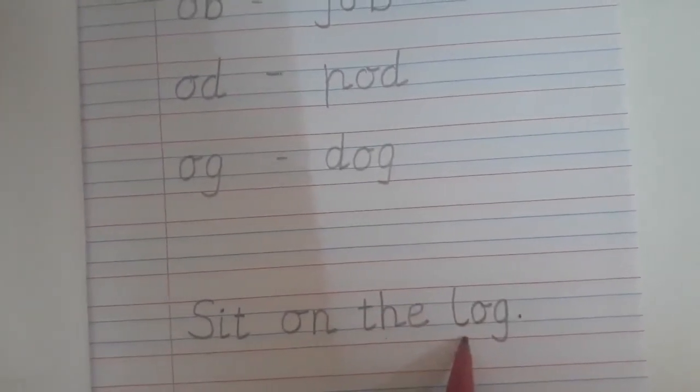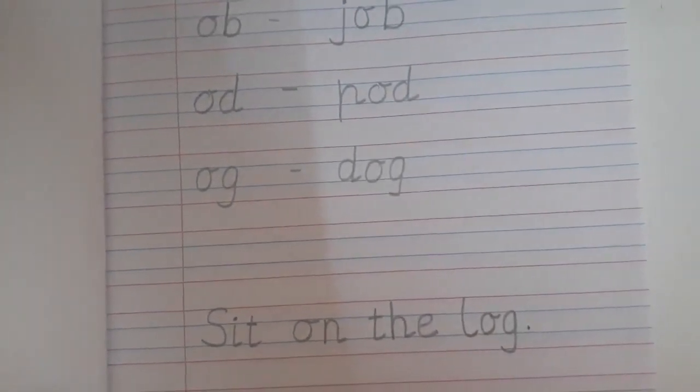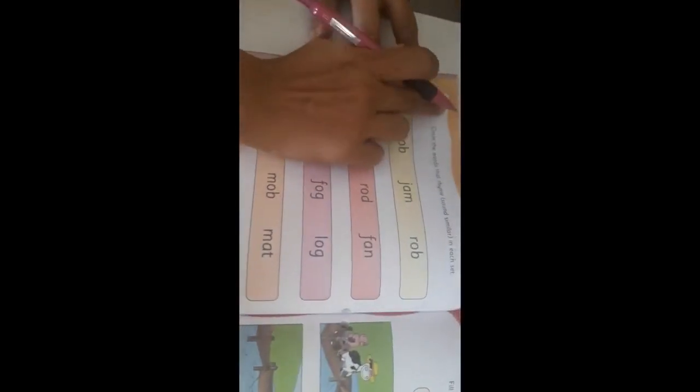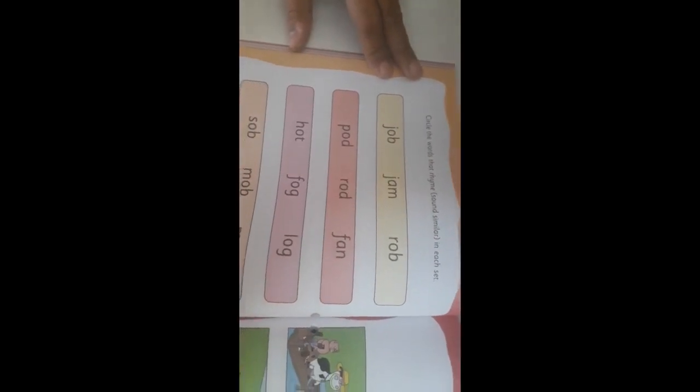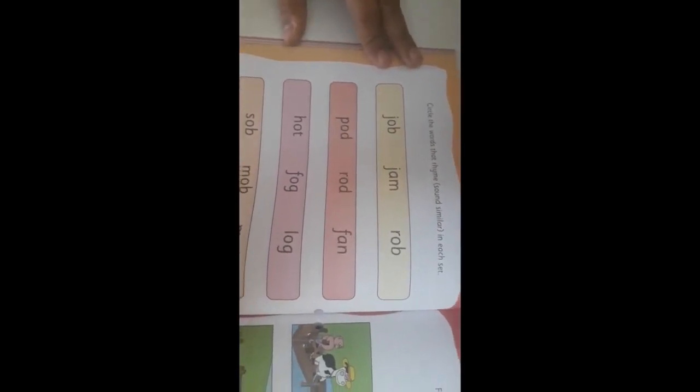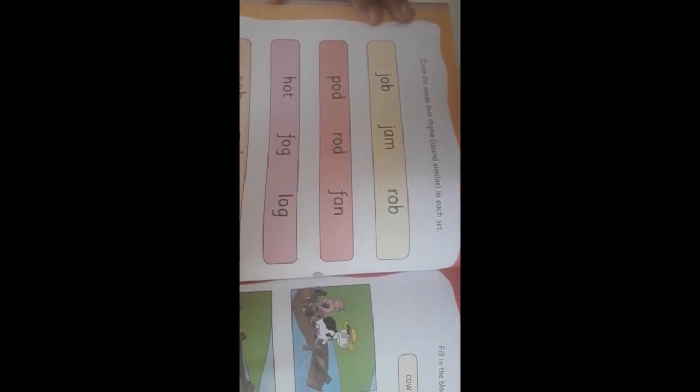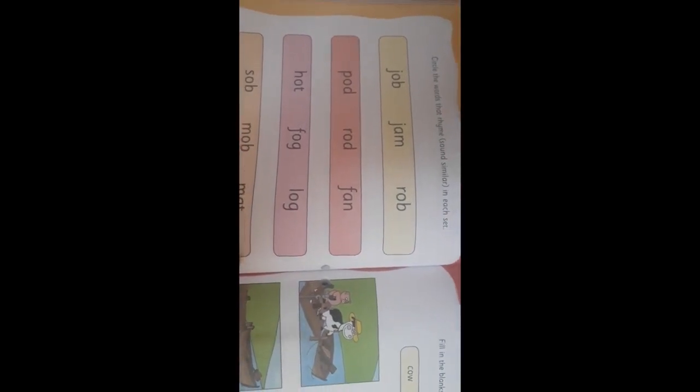This way you are going to do your home fun activity. Children, open your little thinker English book. Here we are going to open page number 28. Now first of all we are going to write today's date here. Circle the words that rhyme. What is the meaning of rhyme? Which sounds similar.